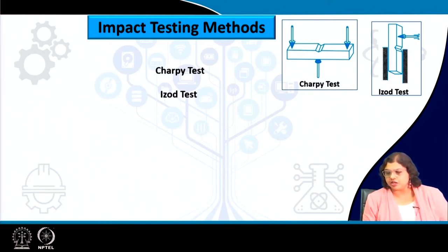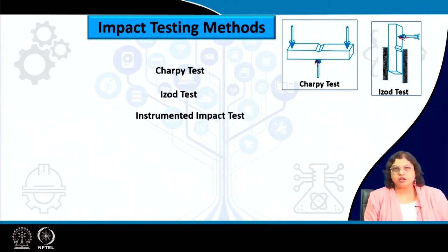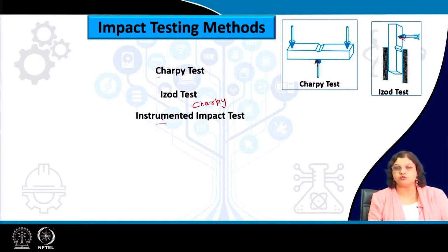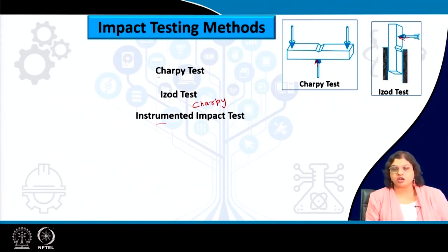While in the Charpy test the load is applied from the back of the notch, the Izod test specimen is placed vertically and the load is impacted on the specimen in that orientation. There is also an instrumented impact test, which is essentially an instrumented Charpy impact test. The difference between a regular Charpy test and an instrumented one is that in the instrumented case we can figure out the variation in load with respect to time. This load versus time plot gives much more information about when deformation starts, the exact load at fracture, total energy for fracture, and the energy required for crack propagation.